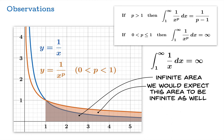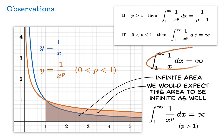Since that larger area is infinite, the improper integral should diverge to infinity as well. The case p equals 1 diverging to infinity should have already told us that it was going to diverge to infinity for all p less than or equal to 1.